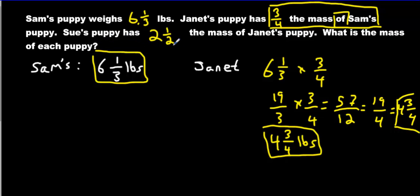And Sue's puppy has 2 and a half times the mass of Janet's puppy. Again, we have what? We have the word of. We have a number on the left of of. We got a number on the right of of. Janet's puppy, we just figured that out. So we can multiply. Let's write Sue. We're going to multiply 2 and a half of Janet's, which is 4 and 3 quarter pounds.